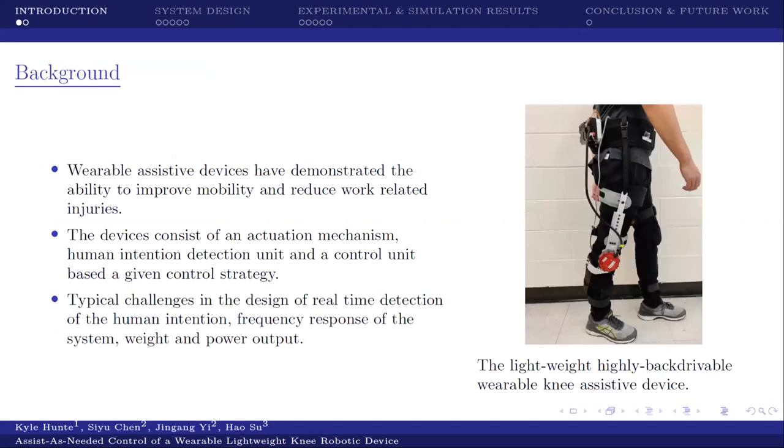This talk is about wearable assistive devices. The idea of research in this area is that these devices have the ability to improve mobility and reduce work-related injuries in industry. These devices generally are made of three components: the actuation mechanism, the human intention detection unit, and a control unit which is based on a given strategy. The challenges that researchers generally face when designing these systems are the detection of the human intention, the response of the system, the weight of the actual system, and the power output of the system.